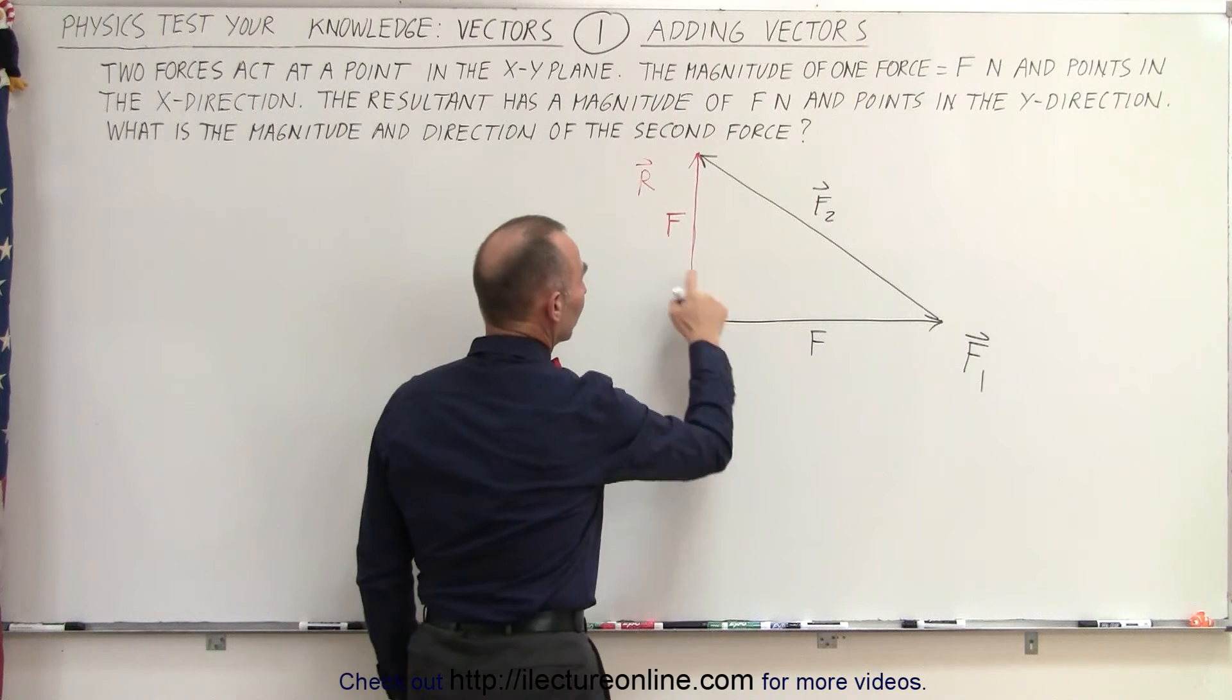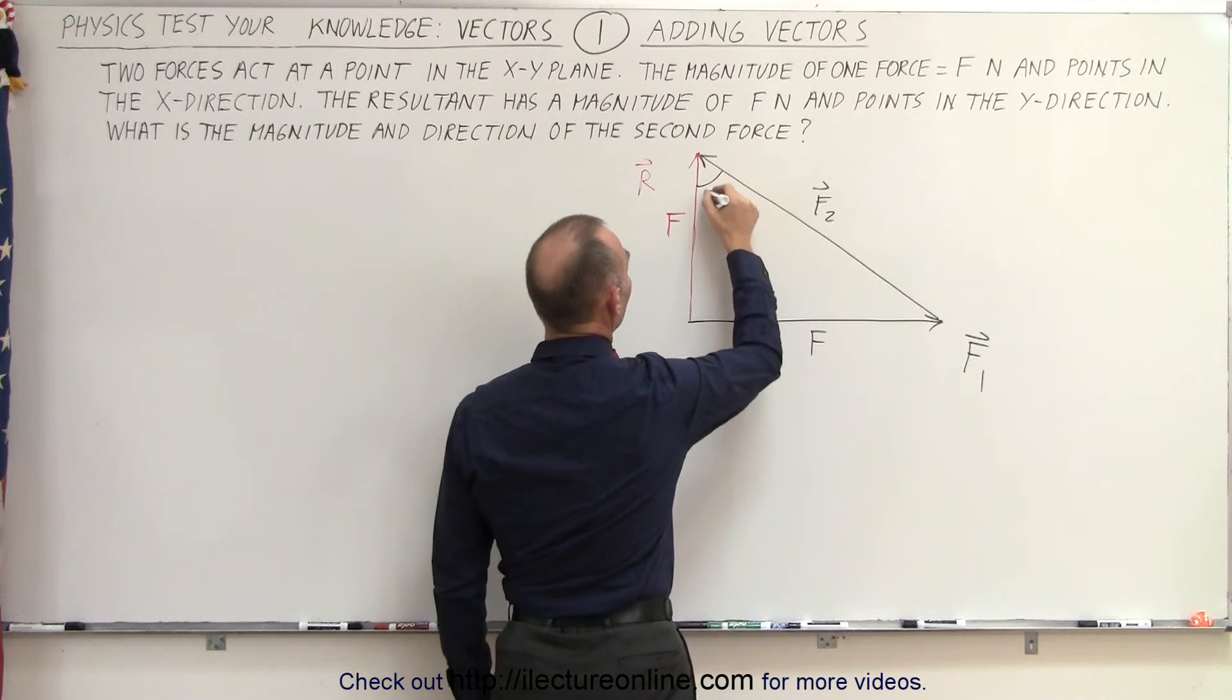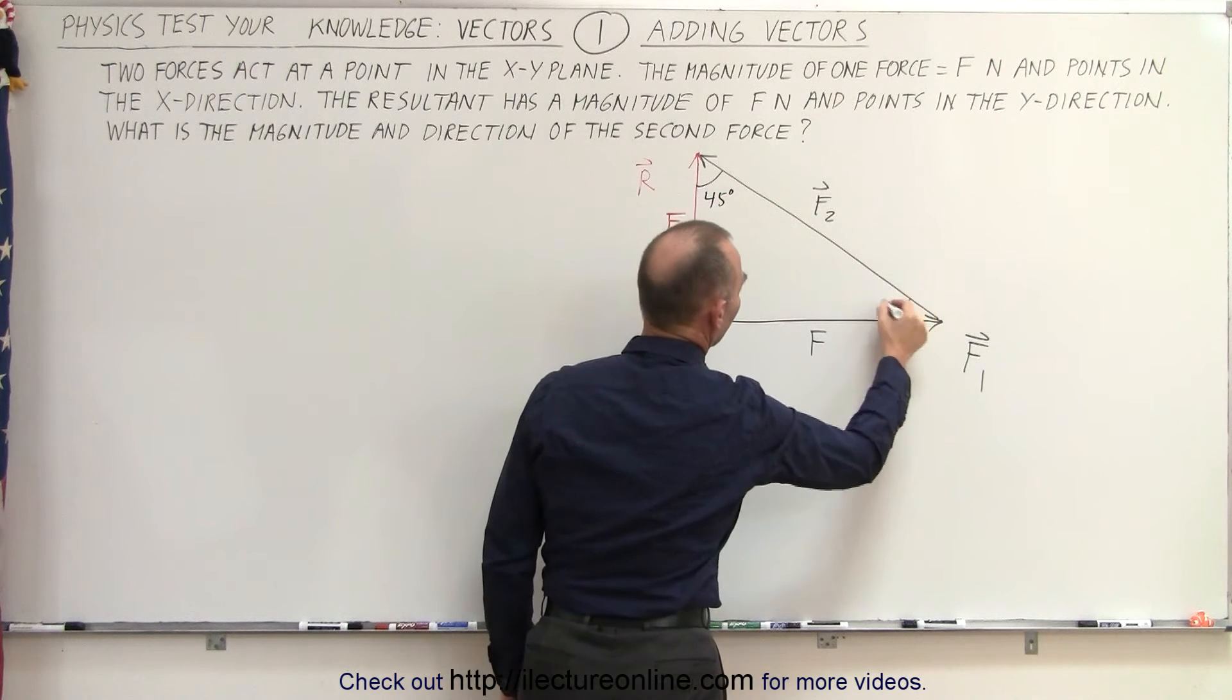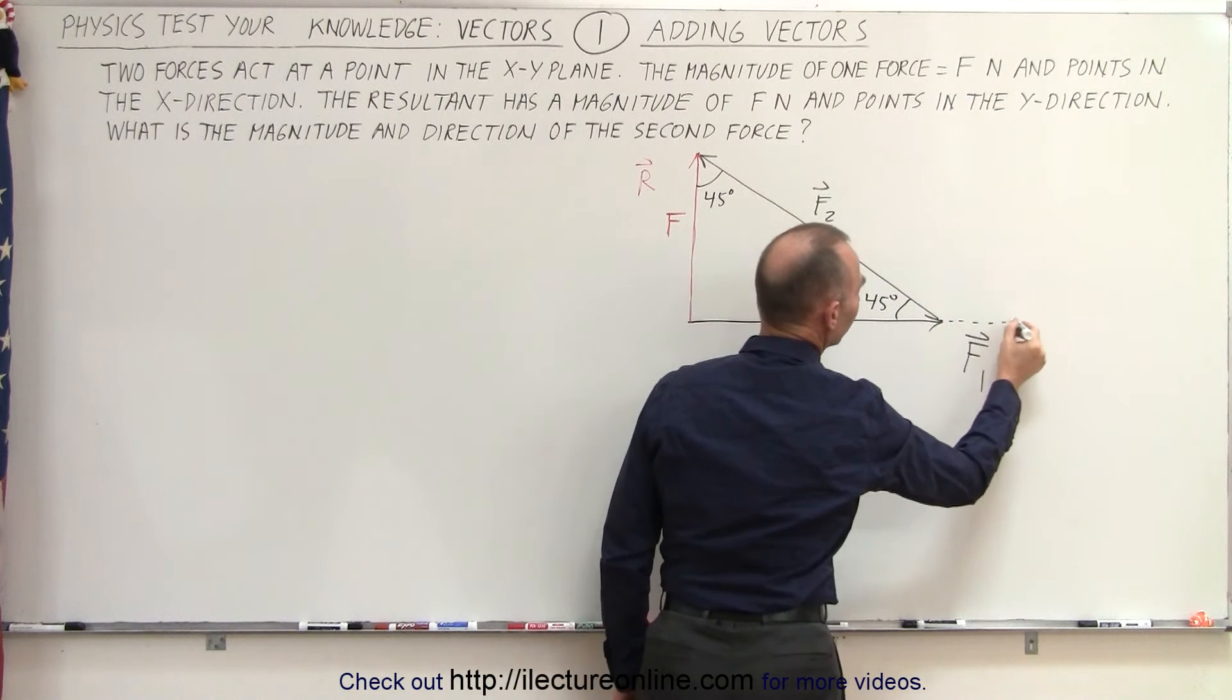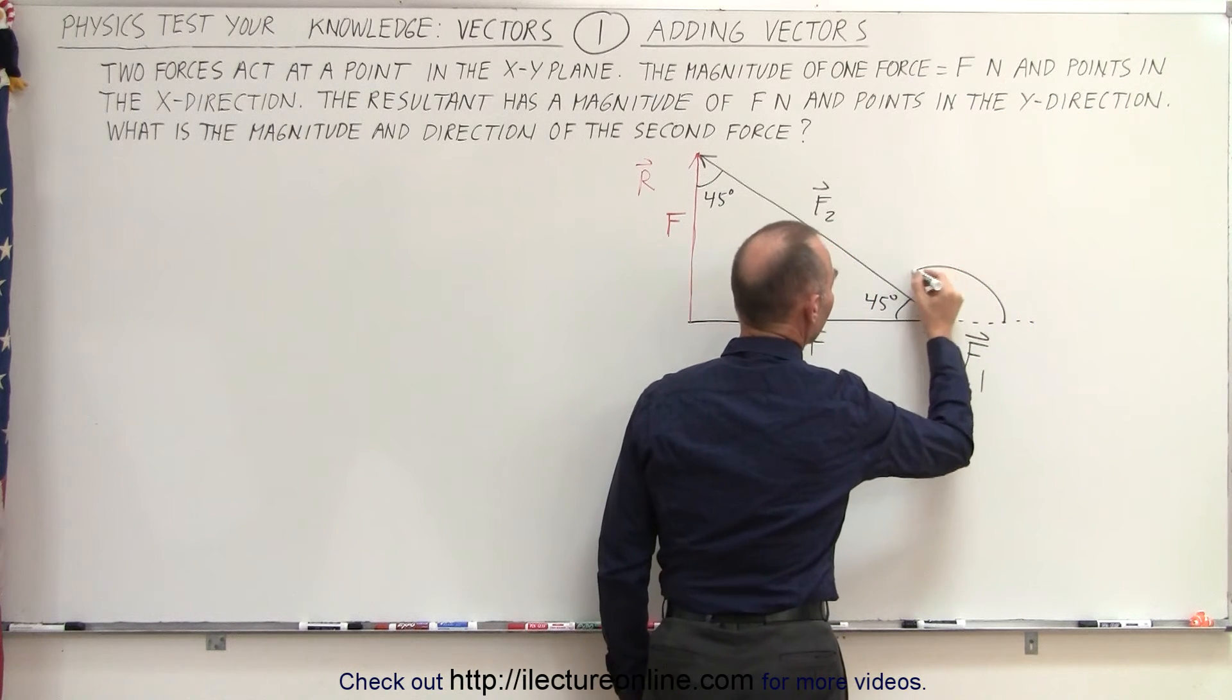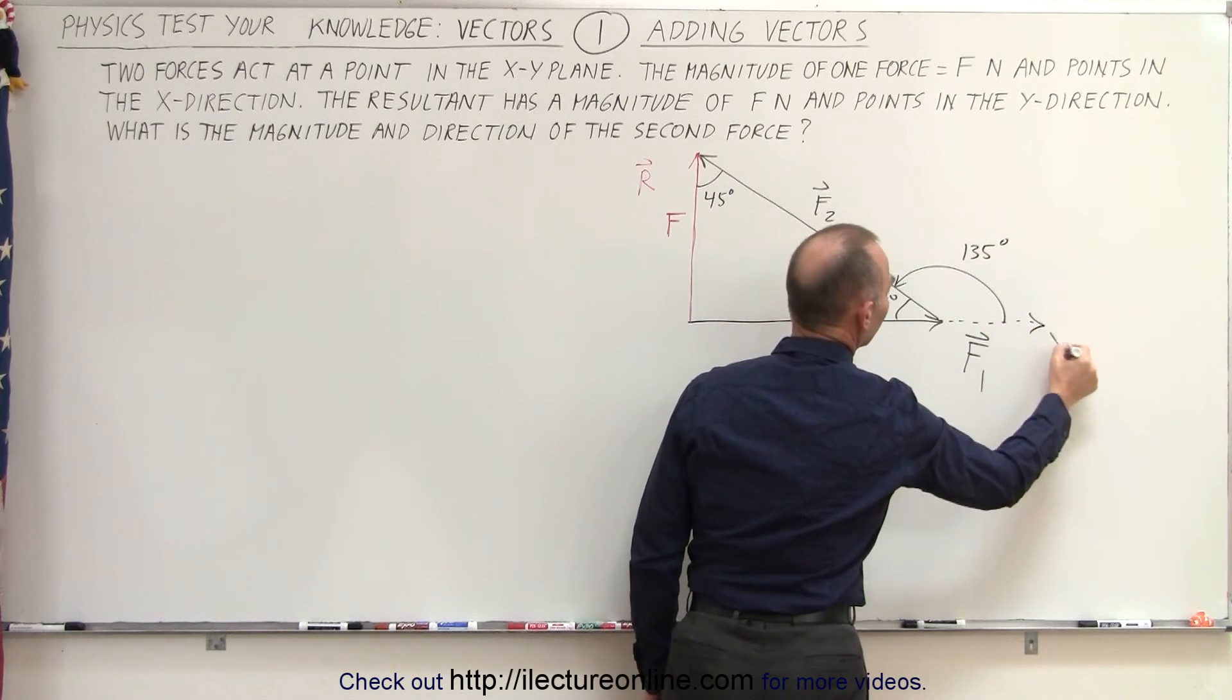Since the magnitude of these are equal to one another, we know then we have a triangle that has two angles of 45 degrees, one over here and one over there, which means that the direction of the second vector will make an angle of 135 degrees relative to the positive x-axis.